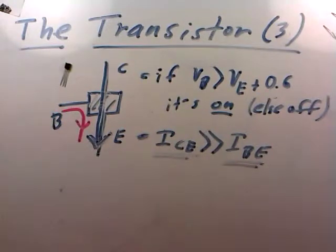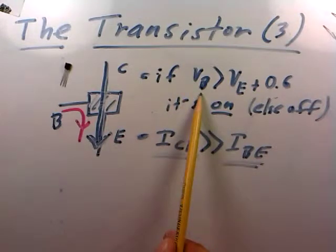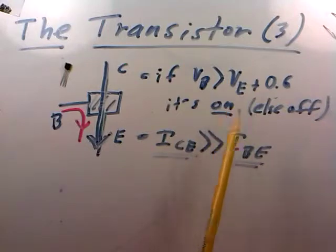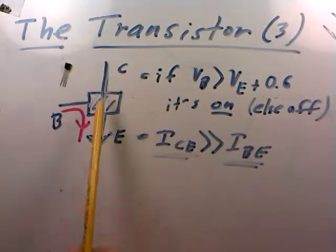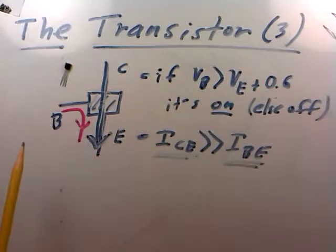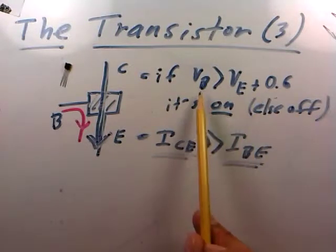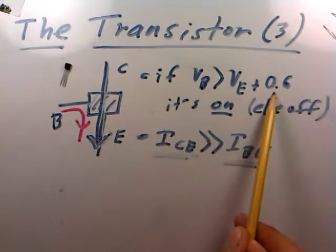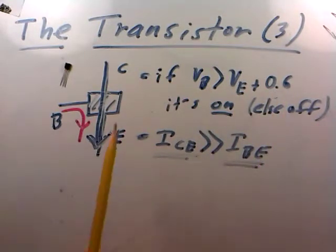We have a couple of operational rules for the transistor. If the voltage on the base is greater than the emitter's voltage by 0.6 volts, the transistor will be on. If the base voltage is any less than the emitter voltage plus 0.6 volts, the transistor will be off and collector-emitter current will not be allowed to flow.